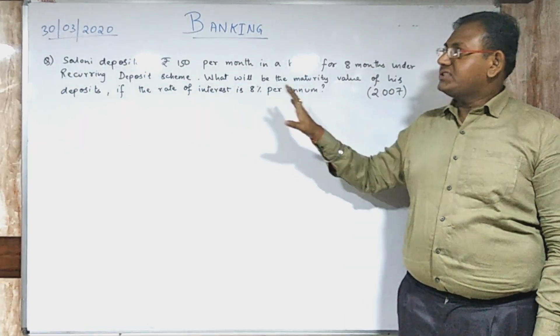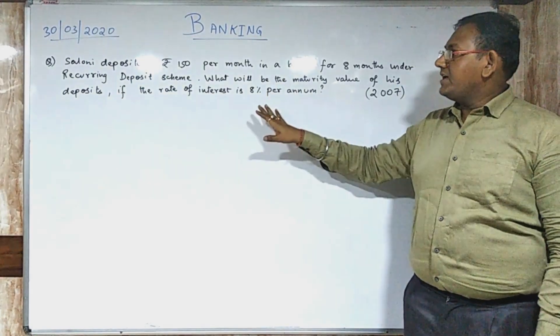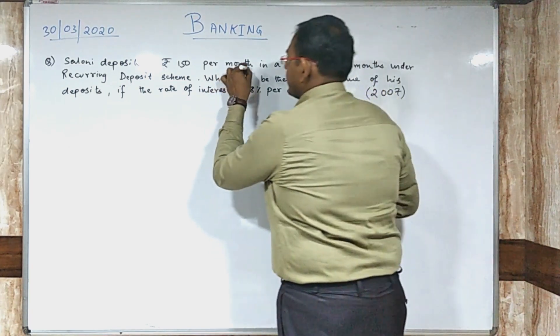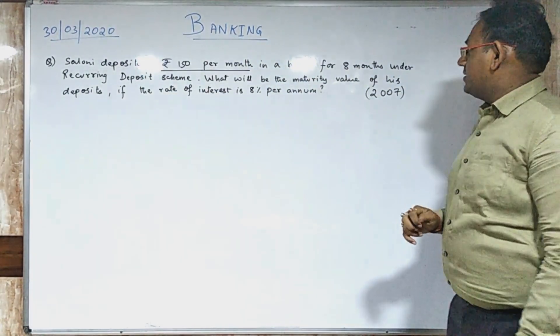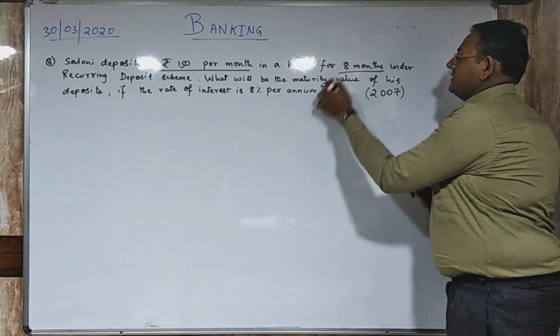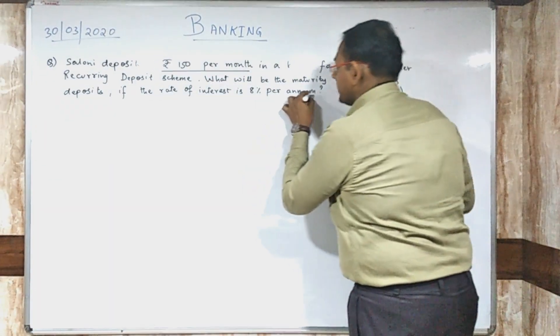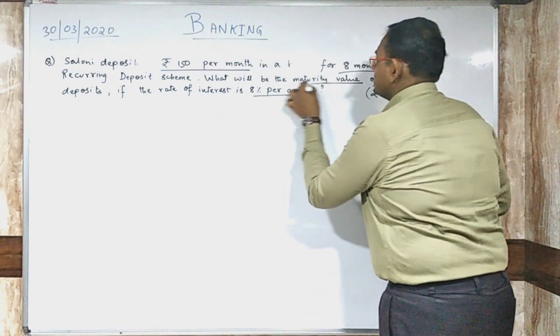Before starting the solution of the question, let us think about the data that is given to you. I am underlining the data. The first data is Rs. 150 per month. The second is 8 months. The third is 8% per annum. And the fourth is your Maturity Value.